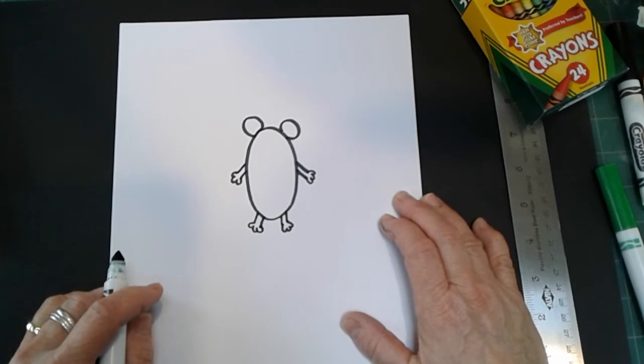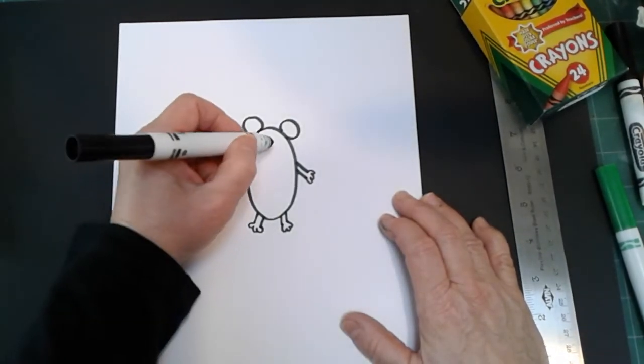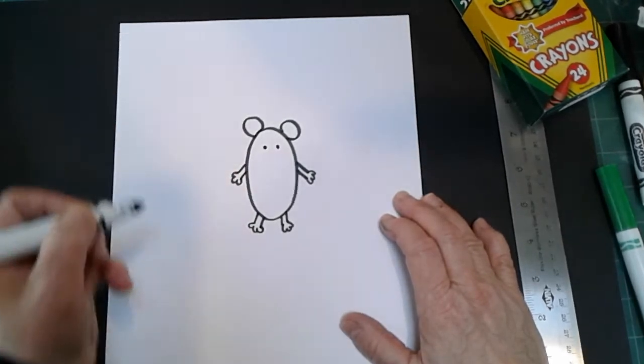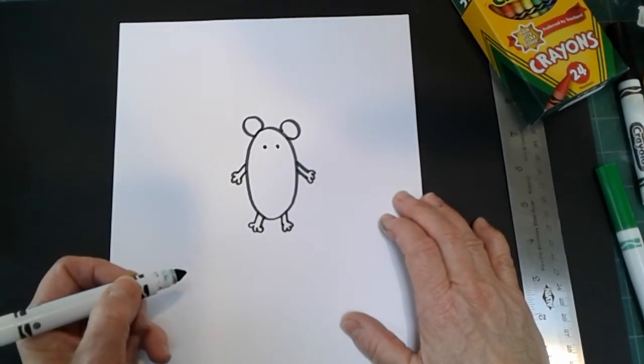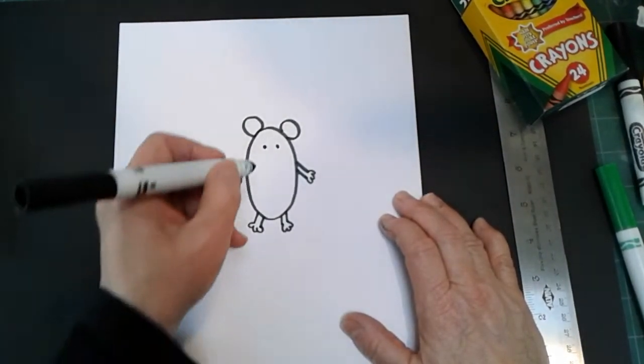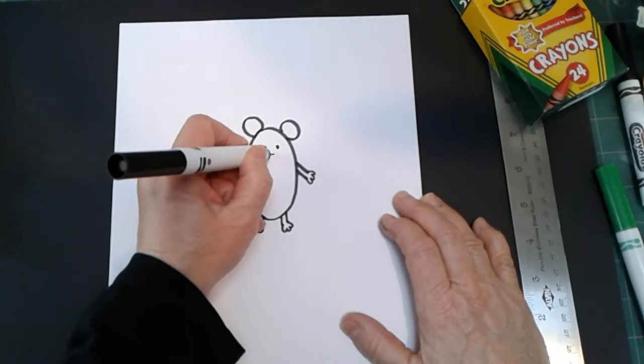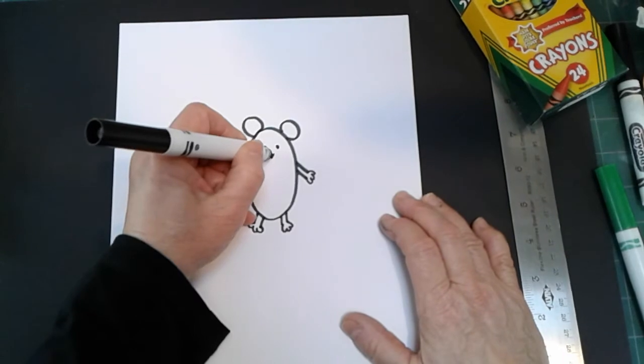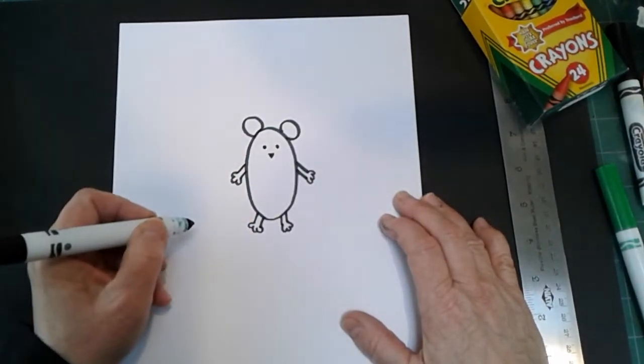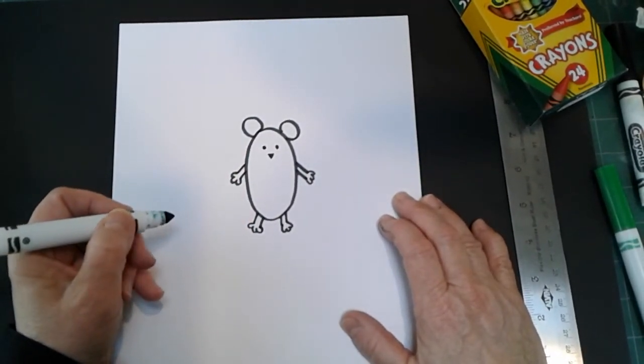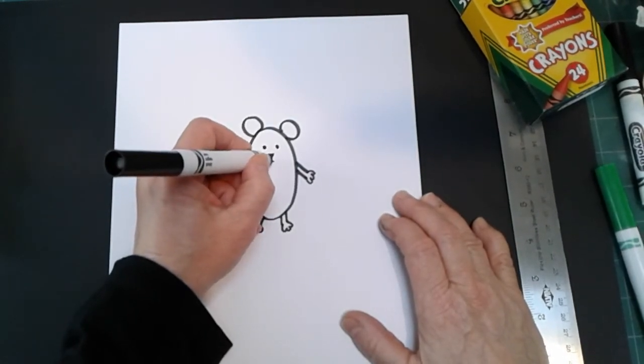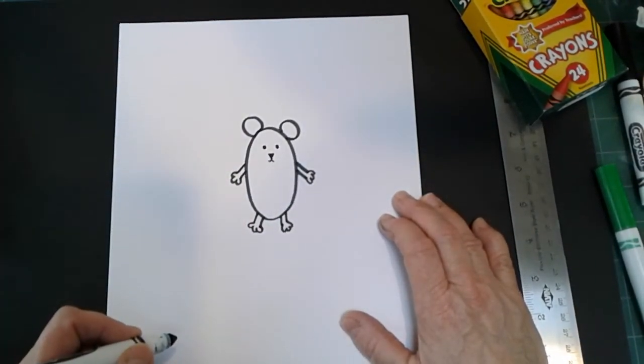Let's give our mouse a face. I'll give him two little mouse eyes that I made round, and I'm going to make a tiny little triangle in the center for his little mouse nose. I did not put a mouth on my mouse, the other one, but let's put a little mouth on this one. A little mouse mouth like that, two little curved lines.